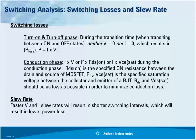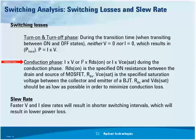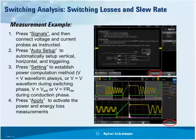Now let's get into switching analysis, which many consider the more important measurement for improving efficiency. There are several important phases: turn-on and turn-off, where the transistor goes through the linear range, and the conduction phase where there's a small voltage across the conducting transistor causing losses. There's also the non-conduction phase — when the transistor is off, there is zero current flowing and typically no losses. Another important measurement is slew rate — measuring the rate of change of switching signals as they transition from on to off and off to on.